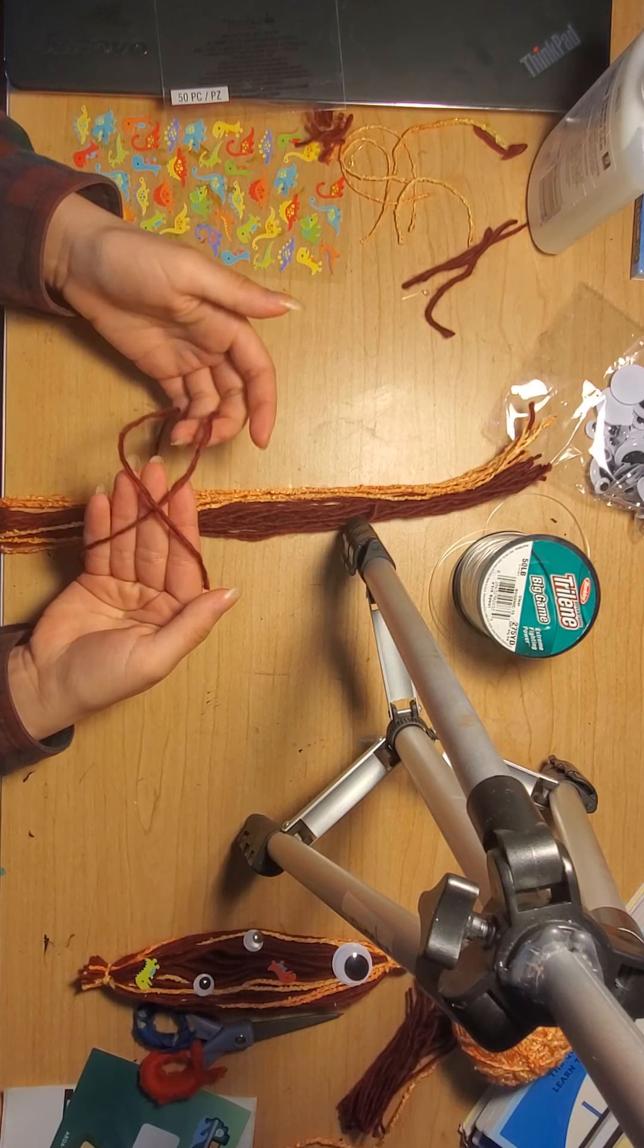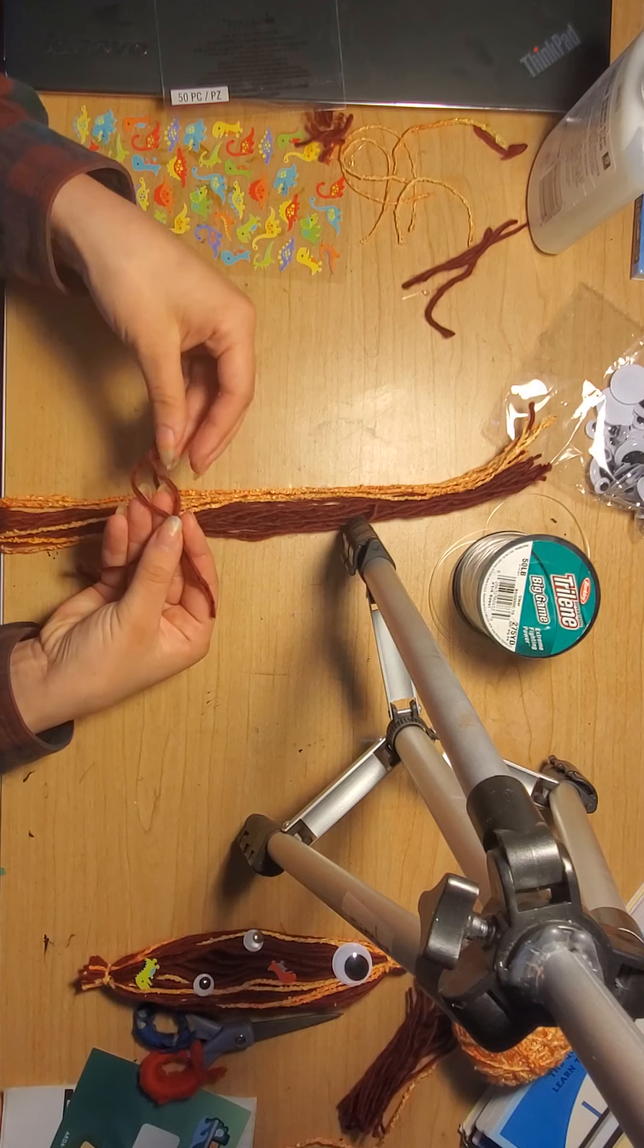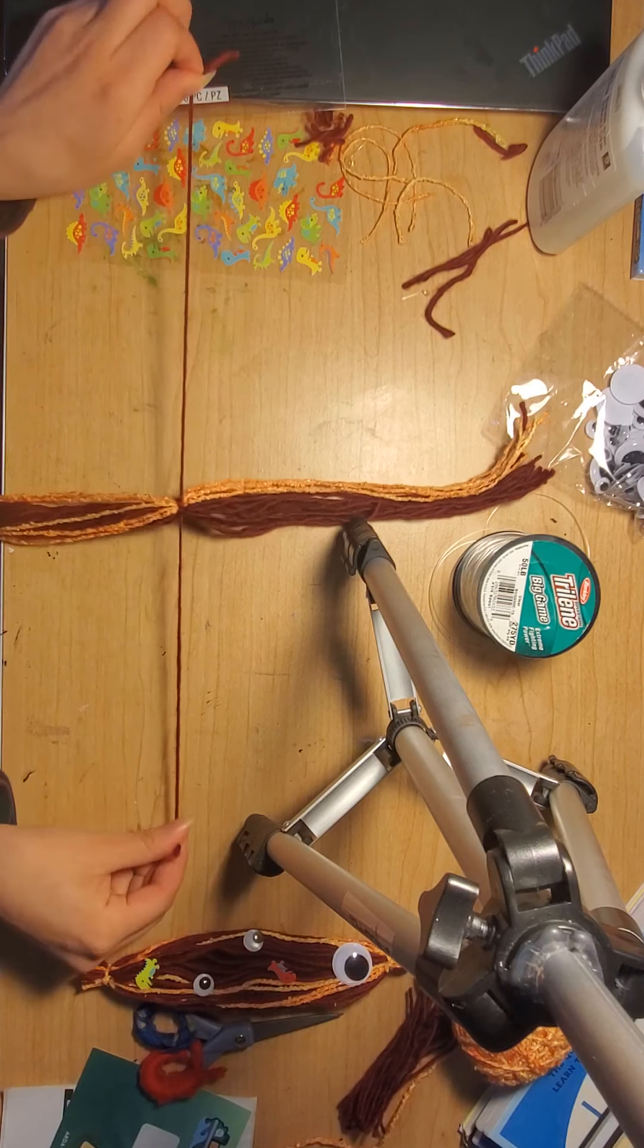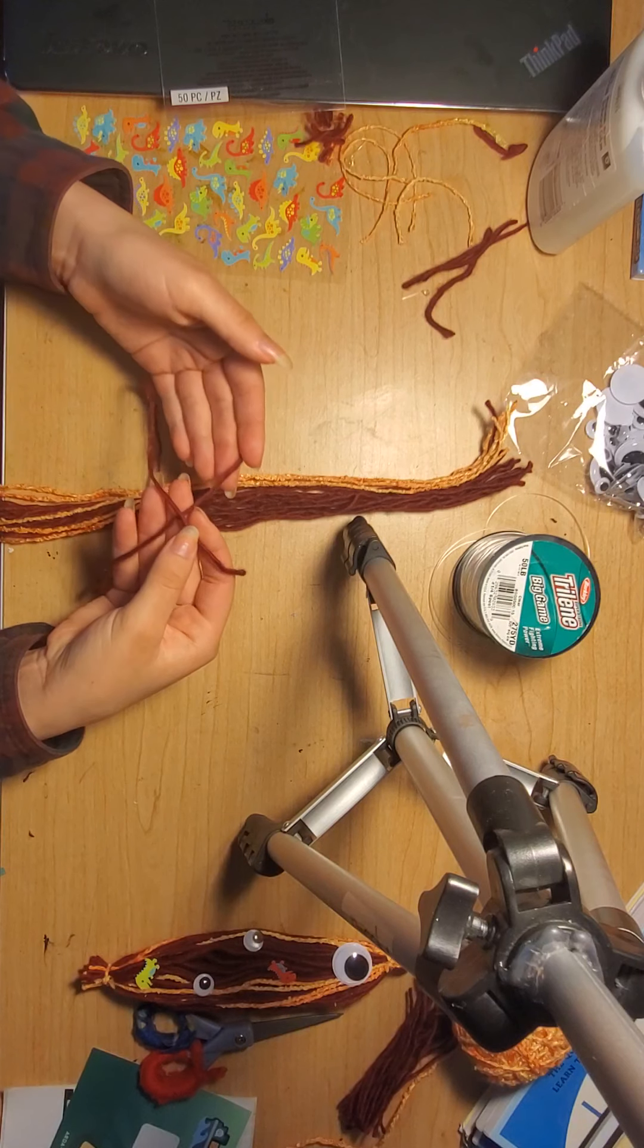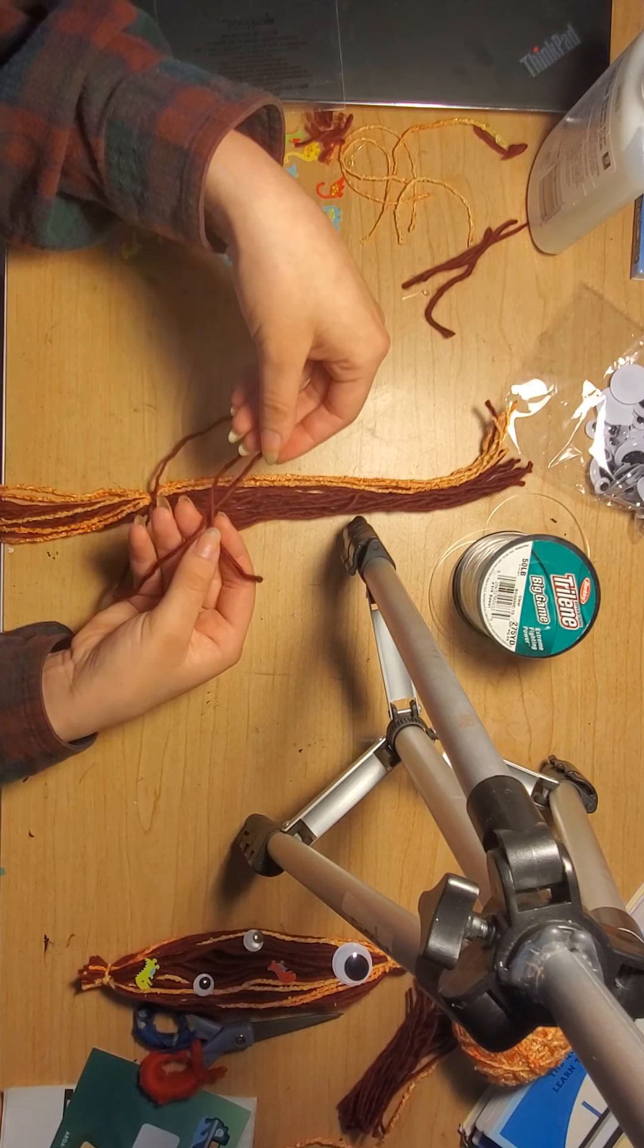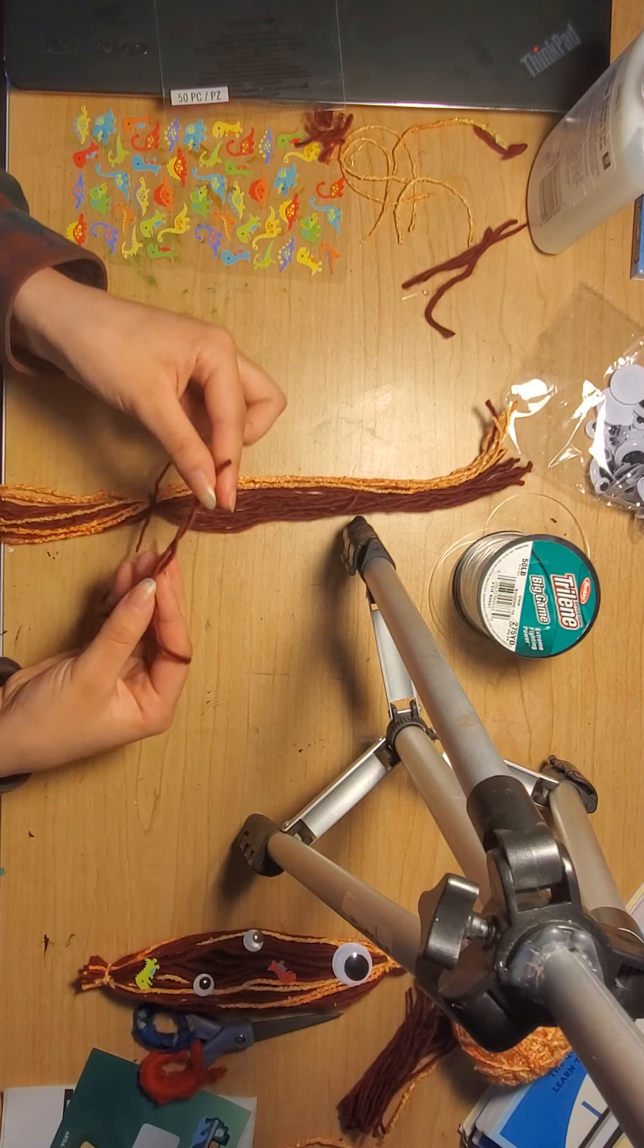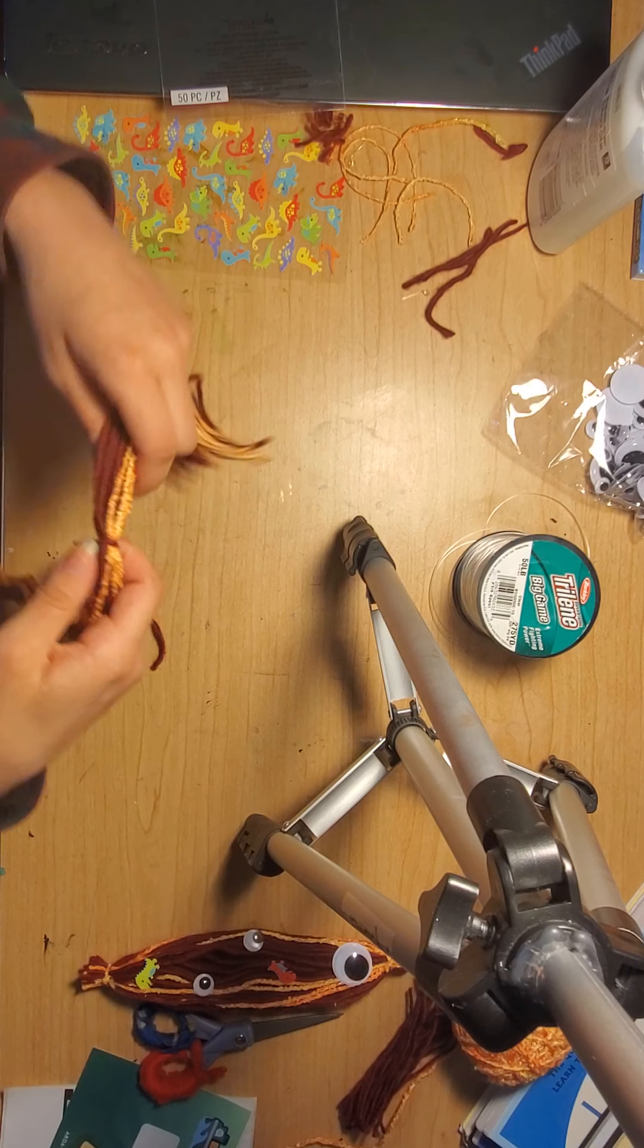So what you're going to do is you're going to cross your pieces over and the piece that's underneath the other piece, you're going to wrap it around and bring it back and then tie it. And you're going to do it again just so that it doesn't come undone because you are tying a knot. You're going to take it and wrap it around and bring it back up.